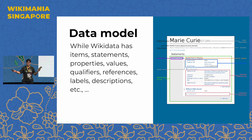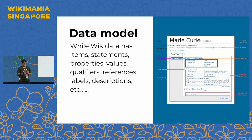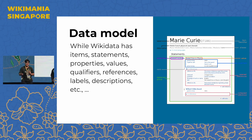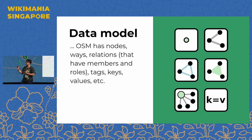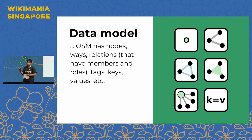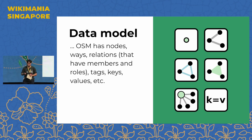Wikidata has items, statements, properties, values, qualifiers, references, labels, and descriptions — and the label and description can be in Chinese, English, or any other language. OpenStreetMap also has a comparable data structure: it has nodes, ways, and relations. Relations are a complicated concept — just remember they have members and each member has a role. On nodes, ways, and relations, there are key-value tags representing what they correspond to in the real world.